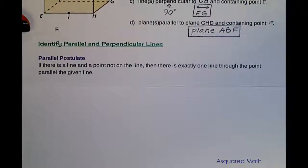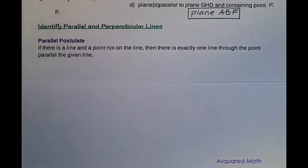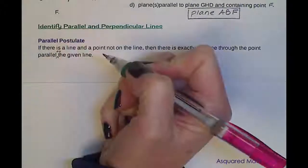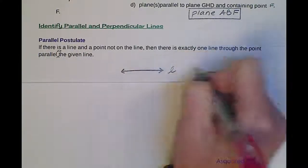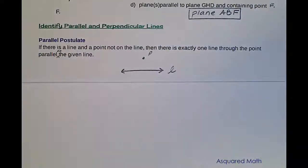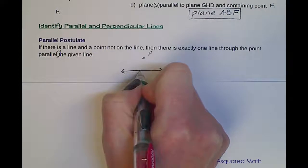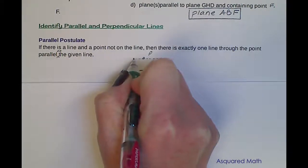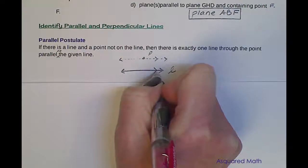Now let's look at some postulates that go along with parallel and perpendicular lines. The parallel postulate says: if there is a line and a point not on the line, then there is exactly one line through the point parallel to the given line. In simpler terms, we have line L and some point P sitting somewhere around line L, and there is exactly one line going through P that is parallel to L.